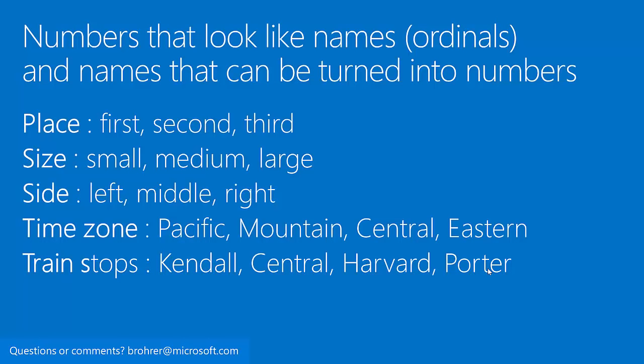There are also numbers that look like names — ordinals, for instance — and names that can be turned into numbers. These are names that have a distinct order, like first, second, third. It helps if the difference between each is similar: small, medium, large — there's a distinct order, and medium is about as much bigger than small as large is than medium. Left, middle, right — time zones, train stops — anything that has an order can be turned into a number and interpreted by a machine learning algorithm.